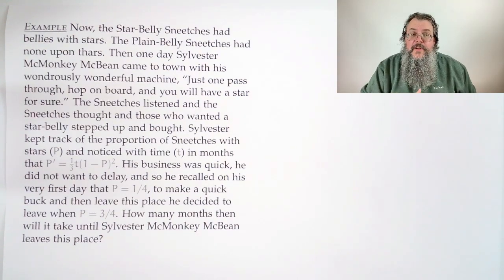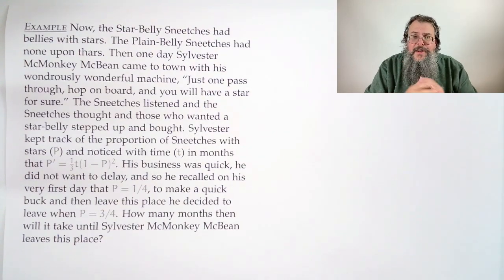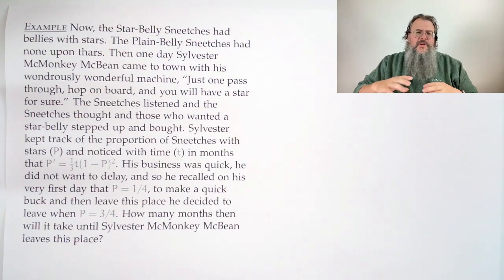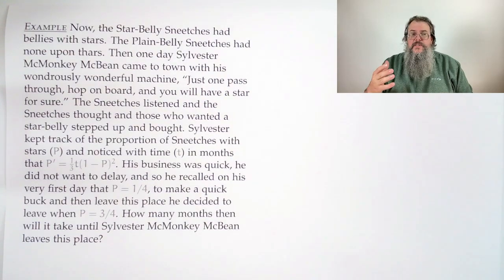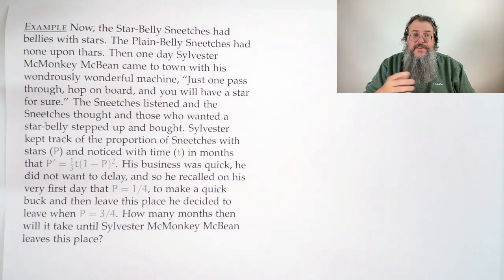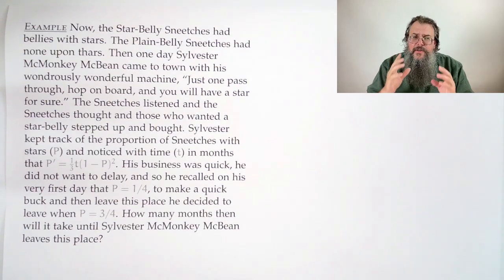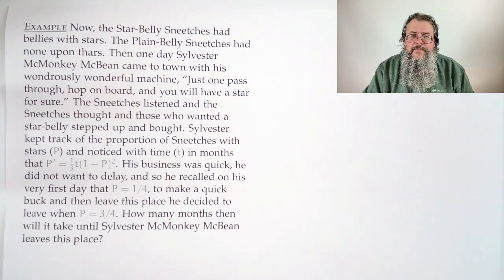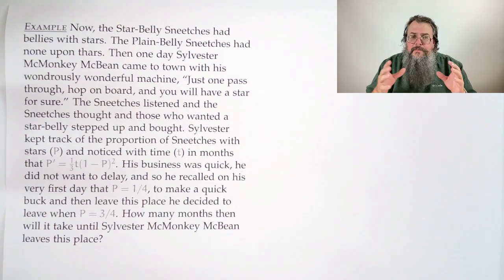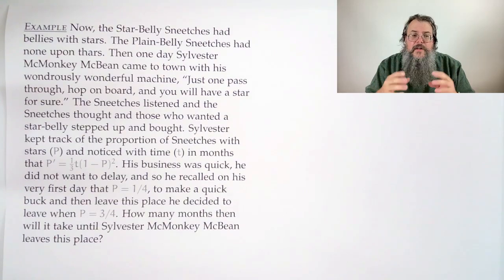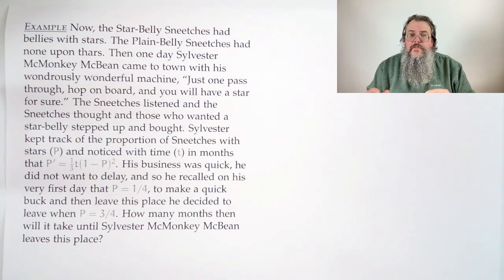Now the star-bellied sneetches had bellies with stars. The plain-bellied sneetches had none upon thars. Then one day, Sylvester McMonkey McBean came to town with his wondrously wonderful machine. Just one pass through, hop on board, and you will have a star for sure. The sneetches listened and the sneetches thought, and those who wanted a star-belly stepped up and bought. Now Sylvester kept track of the proportion of sneetches with stars, called P, and notice with time, called T in months, that P' is 1/3 T times (1 minus P) quantity squared.